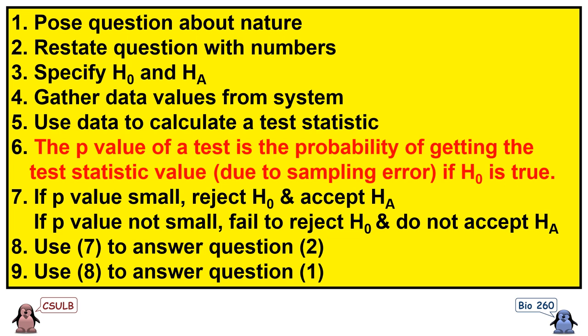Fifth, we use the data from step 4 to calculate some kind of test statistic. Sixth, the p-value of a statistical test is the probability of getting the test statistic in step 5 just because of sampling error if the null hypothesis is true — remember that p stands for probability. Seventh, if the p-value is small, we reject the null hypothesis and accept the alternative. If it's not small, we fail to reject the null. Eighth, we use our decision from step 7 to answer our question in step 2.